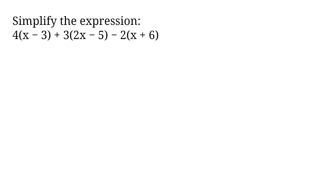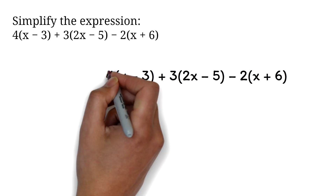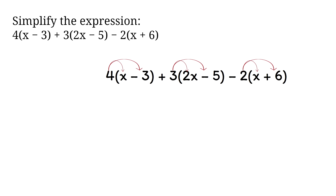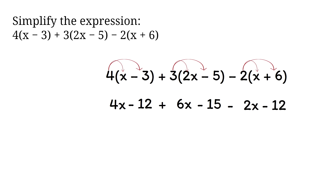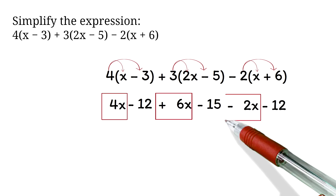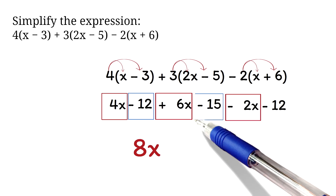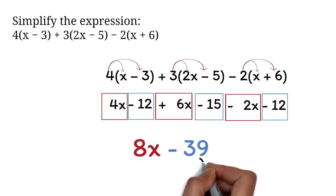Simplify 4(x minus 3) plus 3(2x minus 5) minus 2(x plus 6). Students get a question like this wrong because they make mistakes with the negatives. We distribute each constant: 4 times x is 4x, 4 times negative 3 is minus 12. 3 times 2x is 6x, 3 times negative 5 is minus 15. Negative 2 times x is minus 2x, negative 2 times 6 is negative 12. Combining like terms: 4x plus 6x minus 2x equals 8x. Then minus 12 minus 15 minus 12 equals minus 39. So the correct answer is 8x minus 39.